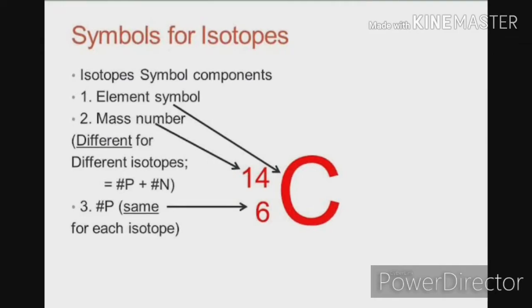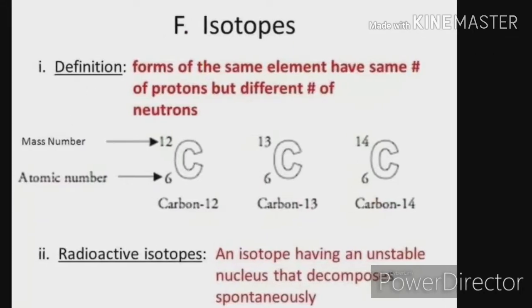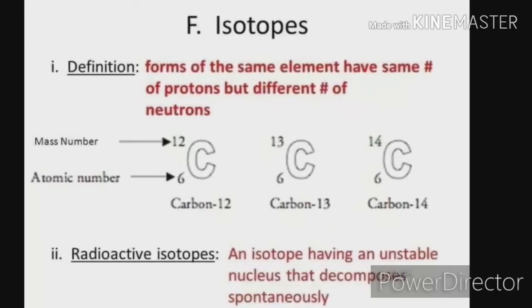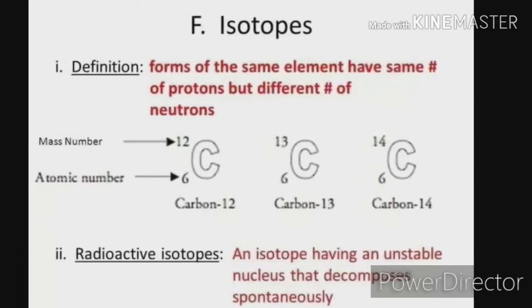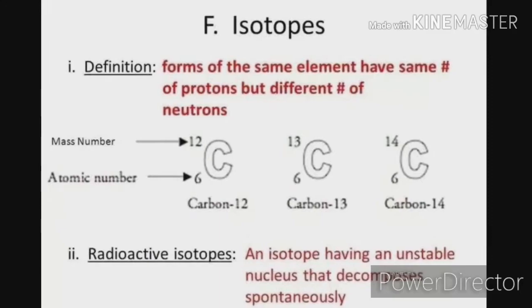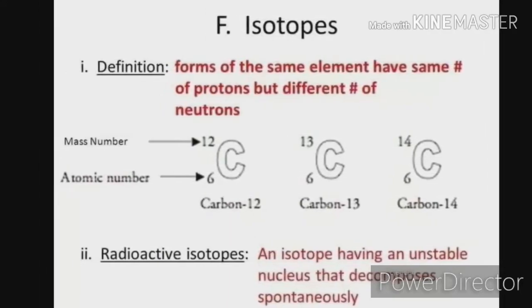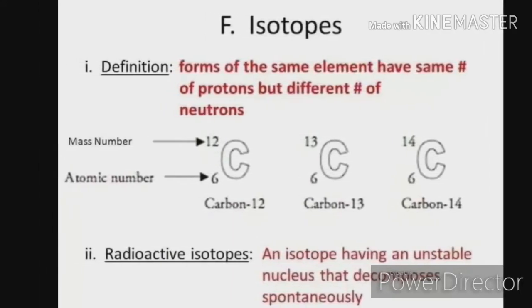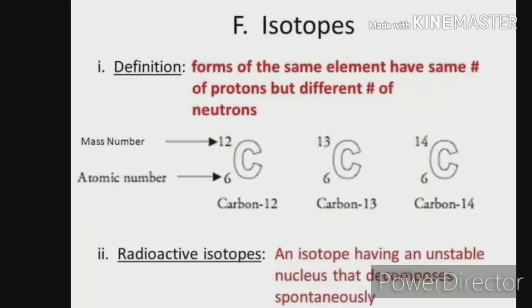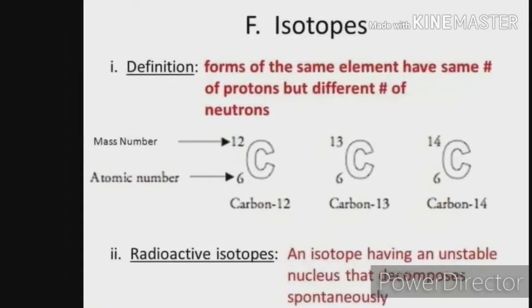Carbon, for example, has two naturally occurring isotopes: 12-6-carbon and 13-6-carbon, because both of these isotopes have 6 protons. They are often written as 12-carbon and 13-carbon. 12-carbon has 6 neutrons and 13-carbon has 12 neutrons.